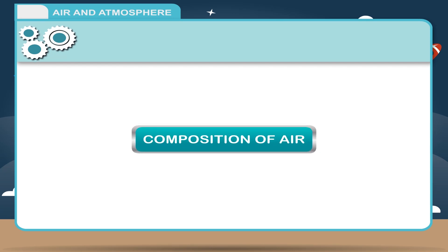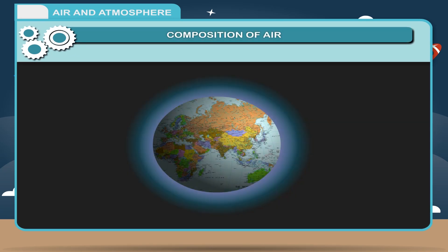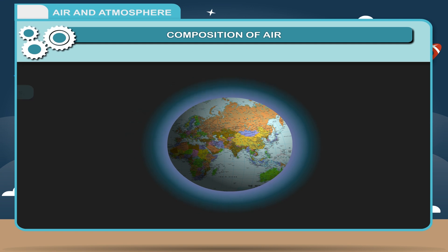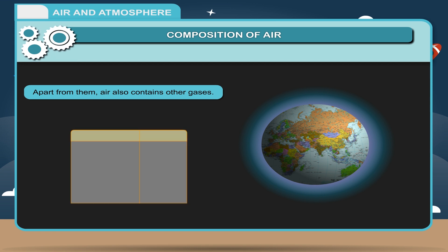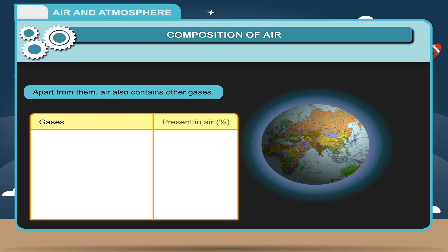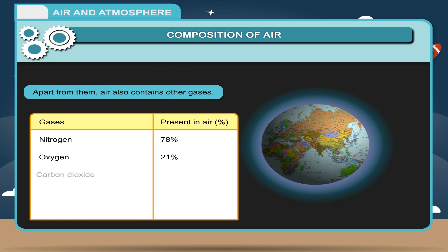Air is a mixture of several gases. The two main constituents of air are nitrogen and oxygen. Apart from them, air also contains other gases. Gases present in air by percentage: nitrogen 78%, oxygen 21%, carbon dioxide 0.03%, and inert gases 0.93%.